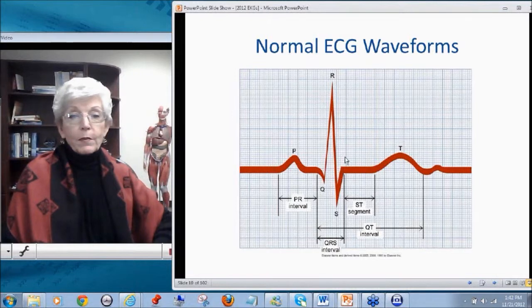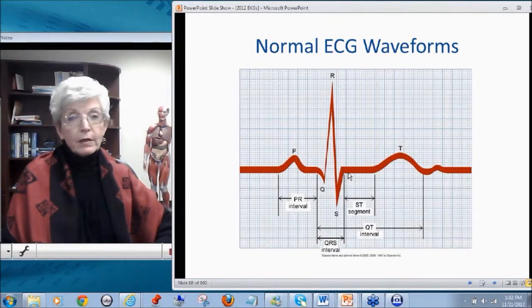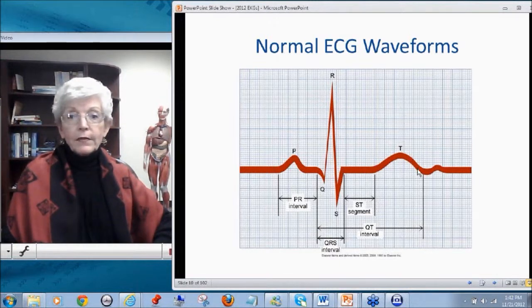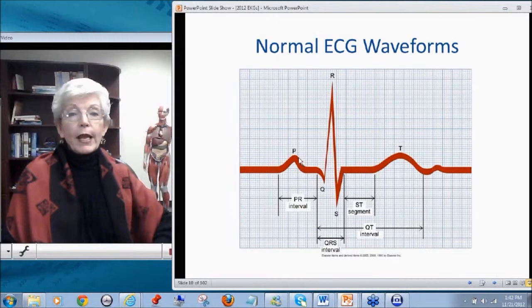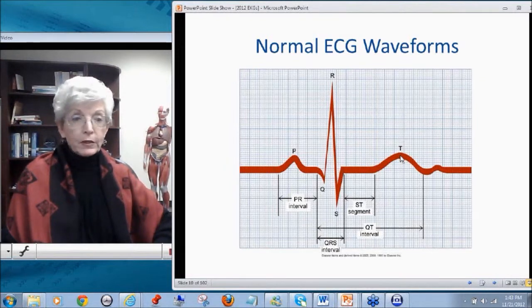The next wave form that we see, which is not rounded, but it's very linear in shape, is the QRS wave. And the QRS represents ventricular depolarization, or contraction. The third wave that we see rounded is the T wave, which represents ventricular repolarization. So atrial depolarization, ventricular depolarization, ventricular repolarization.